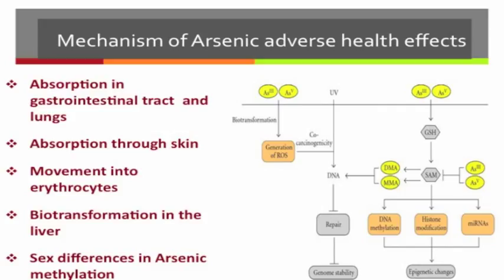After absorption through the gastrointestinal tract and lungs, arsenic moves into erythrocytes and is bound to the globin of hemoglobin. Arsenic is then transported through the body via the bloodstream and distributed to various tissues. The tissues with the highest concentration of sulfhydryl groups, such as the skin, hair, and nails, will have the highest arsenic concentrations.